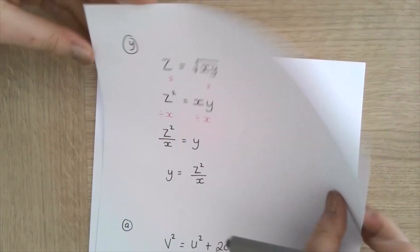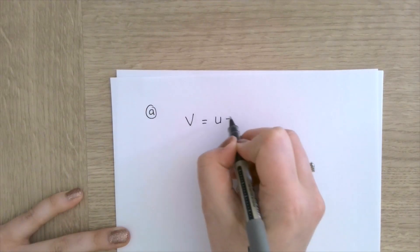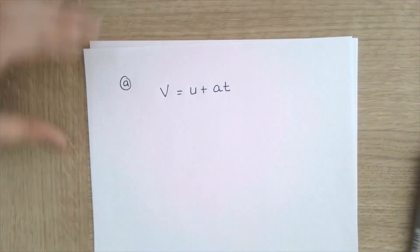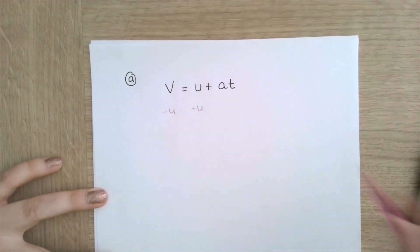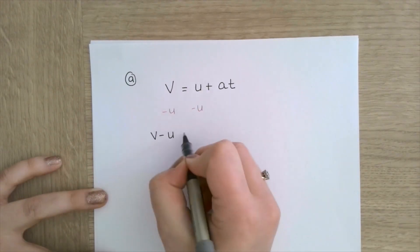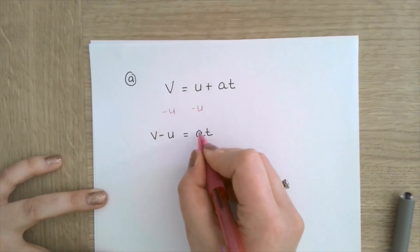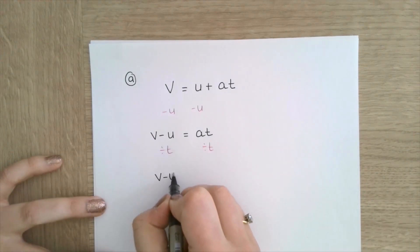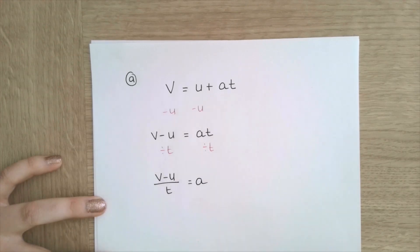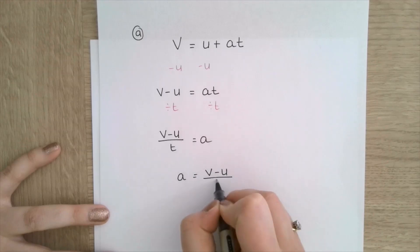Another example: make A the subject using V equals U plus AT. Very similar to the previous one. Subtract U from both sides: V minus U equals AT. Then divide both sides by T: A equals V minus U all over T.